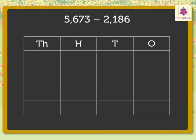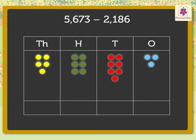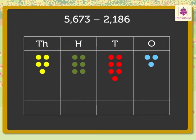So, the number 5,673 will be represented like this with dots. Now, let us cancel the dots equal to the digits in the subtrahend in each column. Starting with the dots in the ones column first, then the tens column, the hundreds column and lastly, the thousands column.